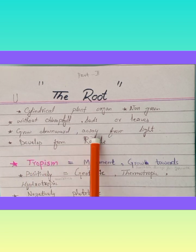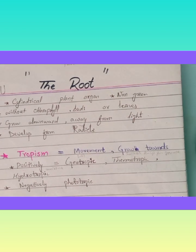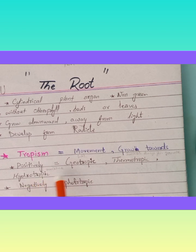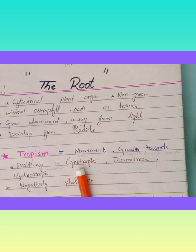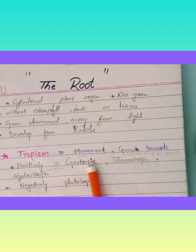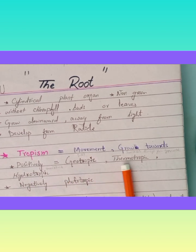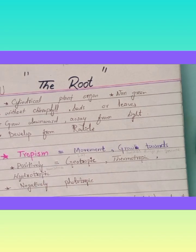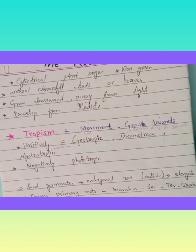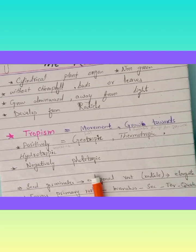The root grows downward, away from light, and develops from the radicle. Tropism is the movement or growth of roots. The roots are positively geotropic, positively thigmotropic, and positively hydrotropic. Positively geotropic means it will move towards the soil, towards gravity. Positively thigmotropic means the roots will grow towards a suitable temperature. Hydrotropic means it will move towards moisture. The roots are negatively phototropic, which means they move in the opposite direction from light.